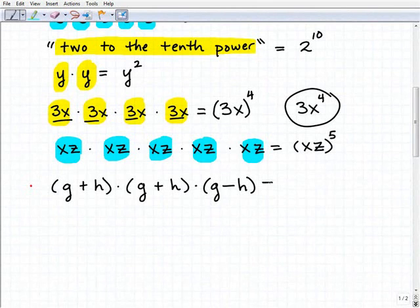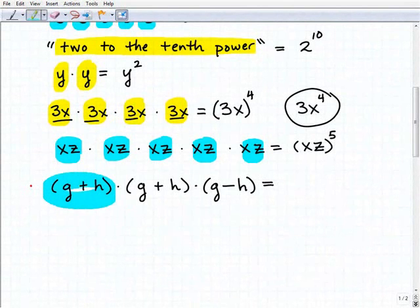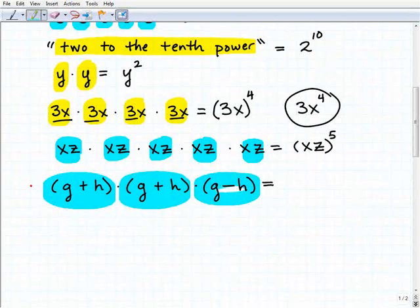And now here, our last problem, we already have parentheses. So we have (g+h) times (g+h) times (g-h).